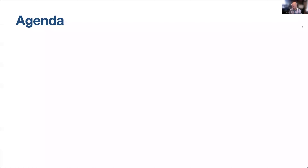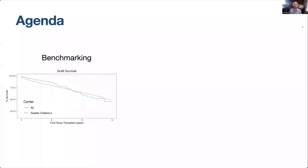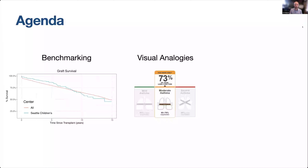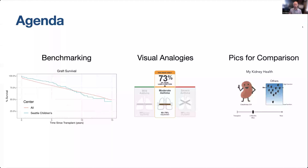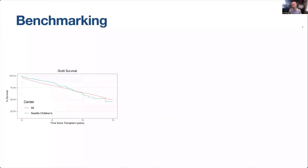So the agenda today: first we're going to talk a little bit about what a benchmarking tool is and how we've used them traditionally and how we might be able to use it in the future to help our patients. We're going to talk about this concept of visual analogies, which is a novel way of communicating numerical information, specifically numerical health information. And then finally, we'll spend most of the time talking about the project I've been working on called Pictures for Comparison, which is designing a patient-facing benchmarking tool.